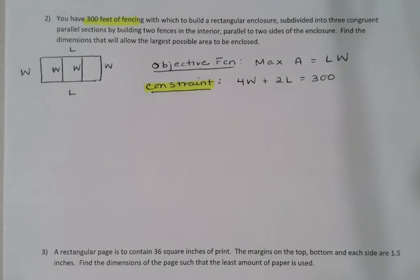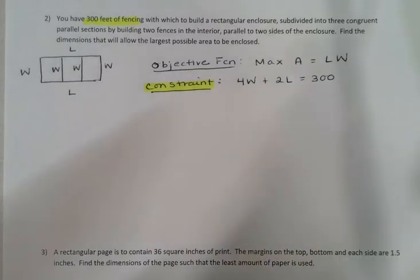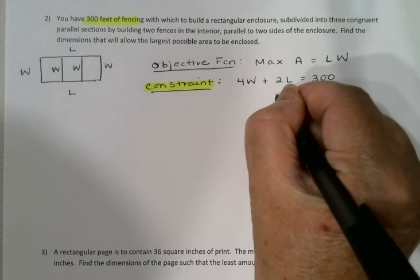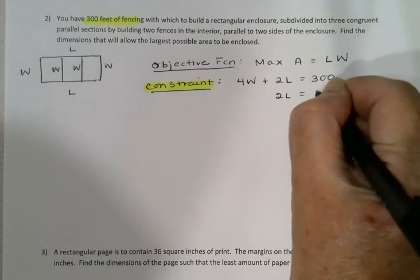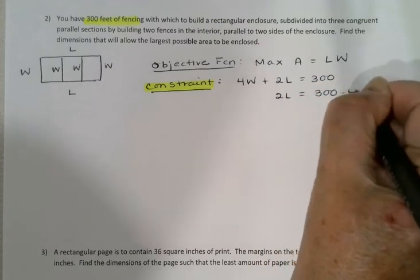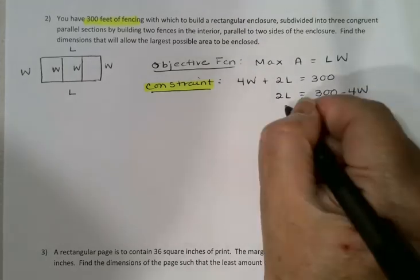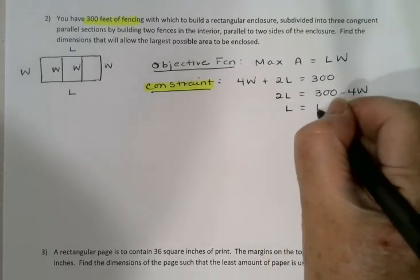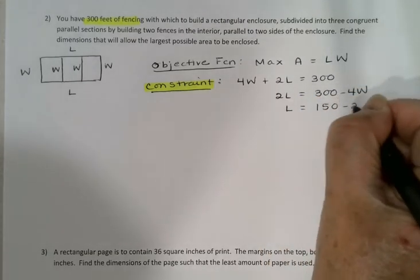Again, you want to solve that for either L or W, it doesn't really matter, and then that will allow me to substitute back into my objective function. So let's solve for L again. 2L = 300 - 4W, and if I divide by 2, L = 150 - 2W.